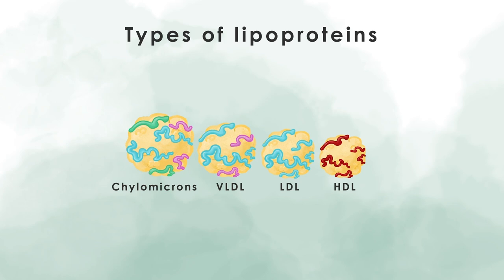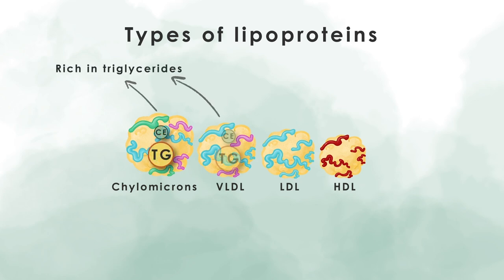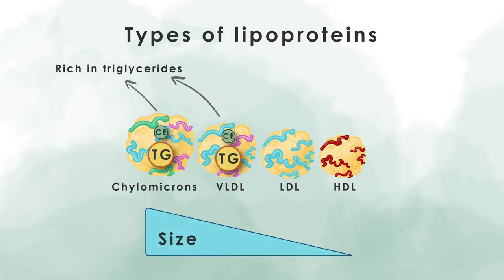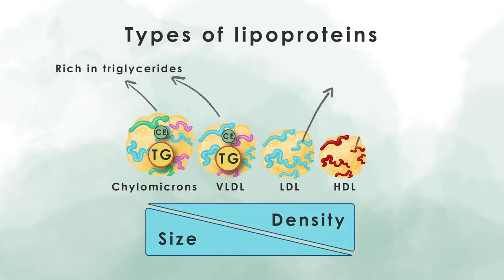We distinguish several types of lipoproteins, mainly characterized by their density and by the appearance of different apolipoproteins on their surface. The largest ones are quite big and loosely packed with triglycerides. The smaller they get, the more dense they are, and their core contains more cholesterol esters, which is a particularly hydrophobic form of cholesterol.